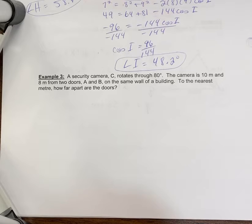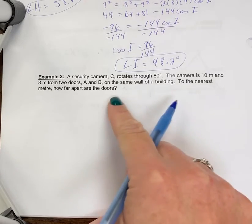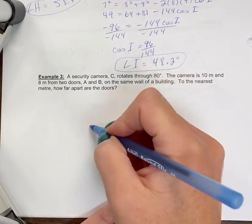A security camera, C, we're just labeling it C, rotates through 80 degrees. The camera is 10 meters and 8 meters from two doors, A and B, on the same wall of a building. To the nearest meter, how far apart are the doors? So I'm going to assume my camera's kind of up top here and looking at two doors. 80 degrees.